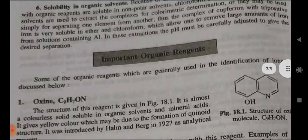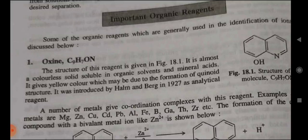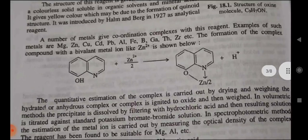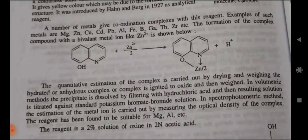Important organic reagents: First — Oxine (C9H7OH), whose structure is given in figure 18.1. It is almost a colorless solid, soluble in organic solvents and mineral acid, giving a yellow color possibly due to the formation of a quinoid structure. It was introduced by Ham and Berg in 1927 as an analytical reagent. A number of metals give coordination complexes with this reagent, such as magnesium, zinc, copper, cadmium, lead, aluminium, iron, bismuth, gallium, thorium, zirconium, etc. The quantitative estimation is carried out by drying and weighing the hydrated or anhydrous complex, or by igniting to oxide. In the volumetric method, the precipitate is dissolved by filtering with hydrochloric acid and the resulting solution is titrated against standard potassium bromide-bromate solution.